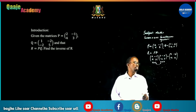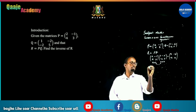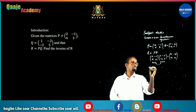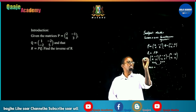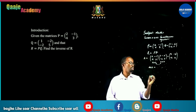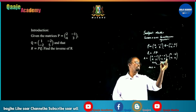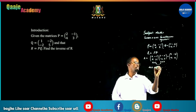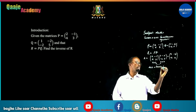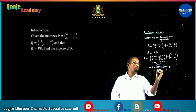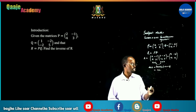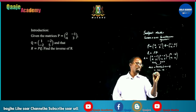To find the inverse of R, we must get the determinant of R. The determinant is the product of the leading diagonal minus the other diagonal: 4 times 7 minus (minus 2 times minus 9), which gives 28 minus 18, equals positive 10.